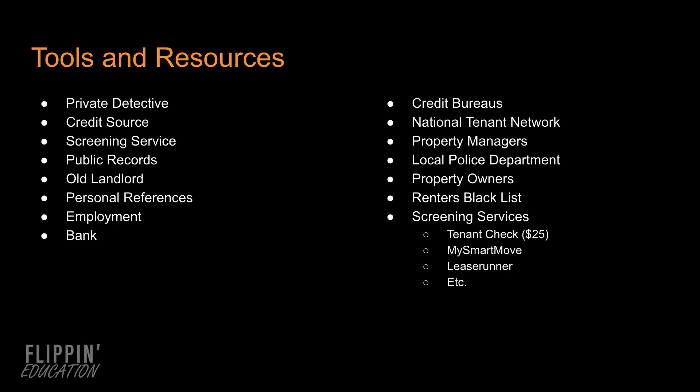Here are some of the tools and resources you can use to vet your potential tenants that are at your disposal online: private detectives, credit scores, screening services, public records, old landlords, personal references, employment references, bank references, credit bureaus, the National Tenant Network, property managers, the local police department, property owners, renters blacklist, and screening services such as Tenant Check, My Smart Move, Lease Runner, among others.